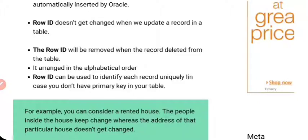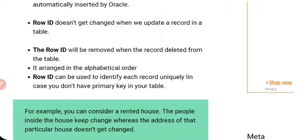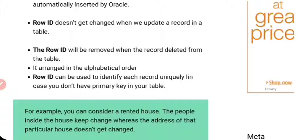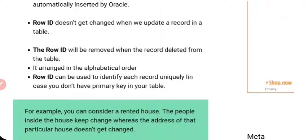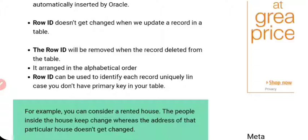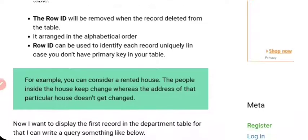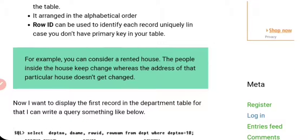When you do not have a primary key in your table, you can identify a record based on the ROWID, because the ROWID is unique for each and every record and represents a physical storage location on your database hard disk. To understand this better, here is an example.